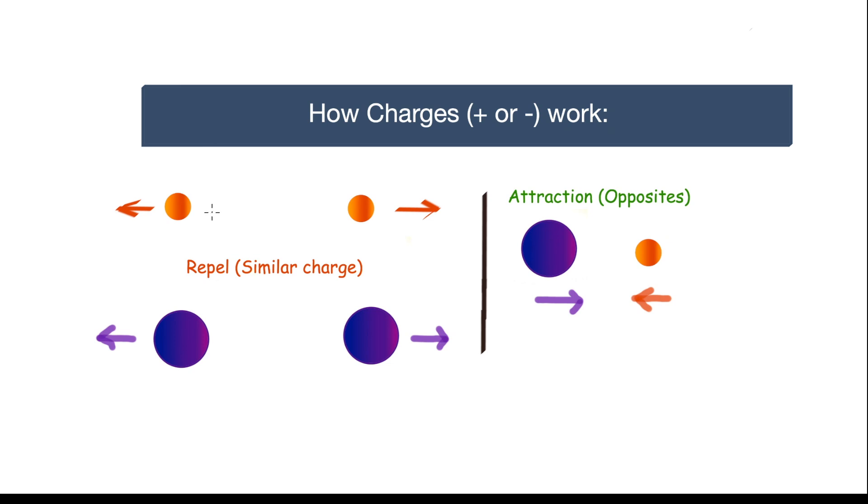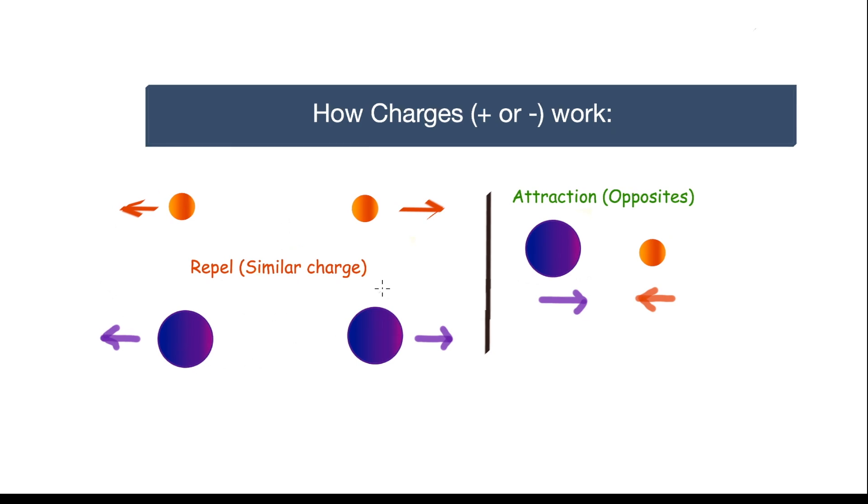Two negatively charged electrons on the top try to be as far apart from each other. While at the bottom we see two positively charged protons trying to be as far apart from each other. These two examples are known as repelling charges.